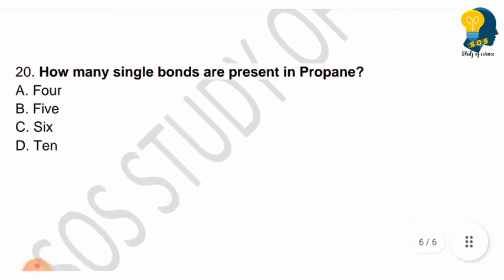Next question: How many single bonds are present in propane? Draw the structure of propane and count the single bonds. Options are 4, 5, 6, or 10. If you write the structure, you will get the answer easily.